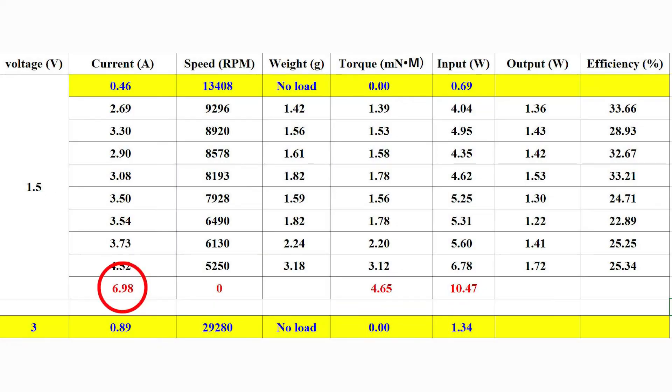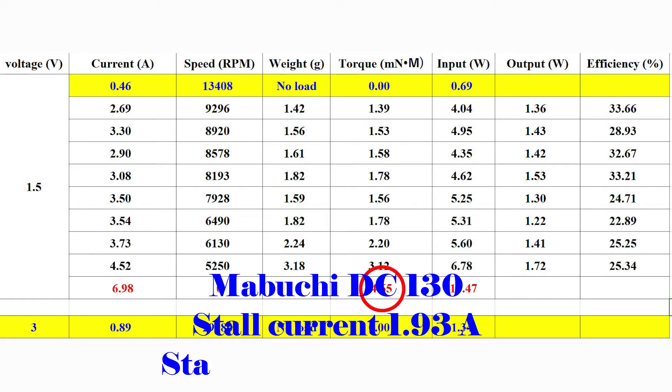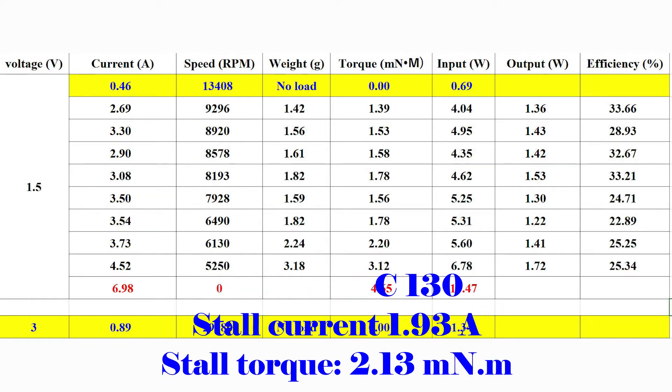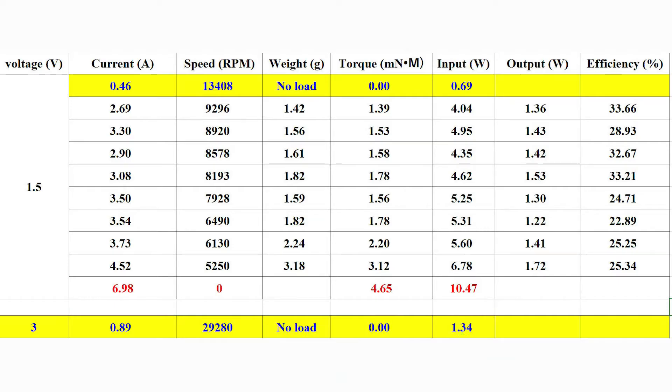The stall current and stall torque are calculated using a linear fit equation with the experimental data set. The stall current is 6.98A and the stall torque is 4.65 mNm, which is much more powerful than my BG motor as we have known.